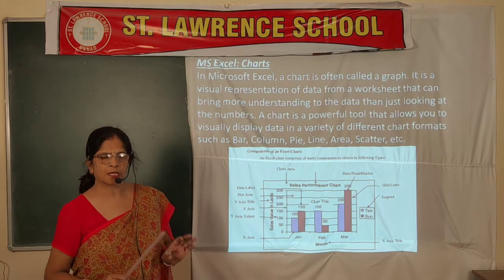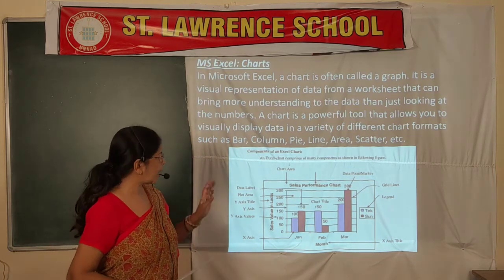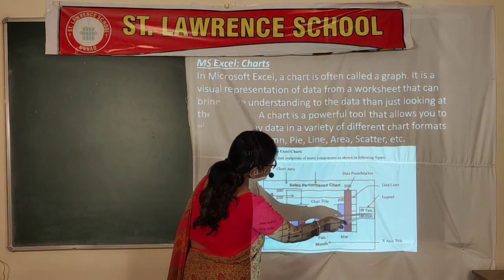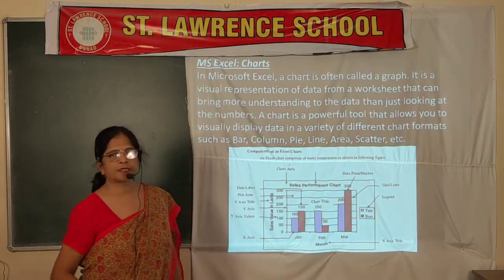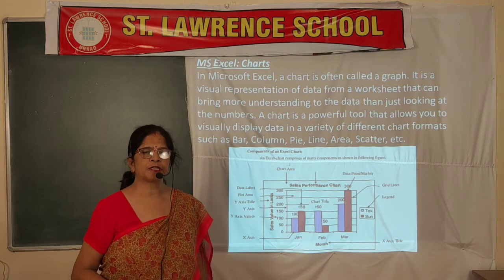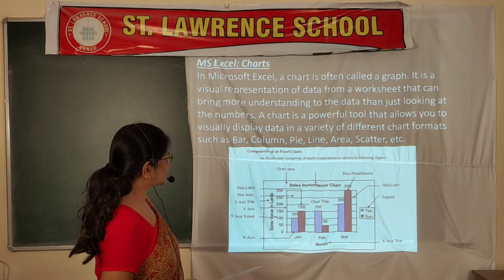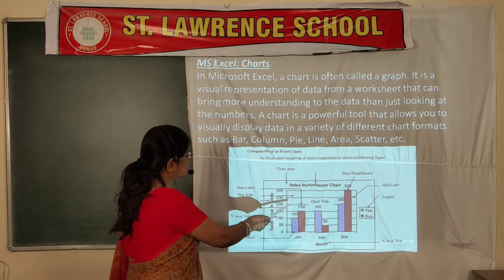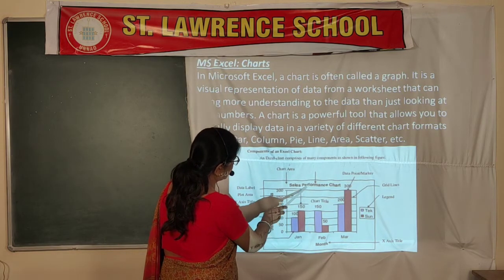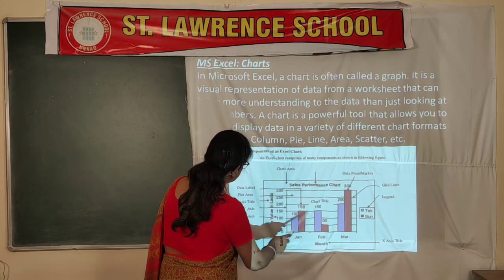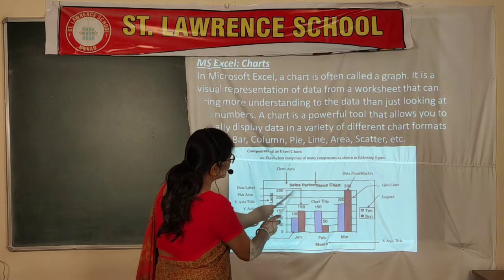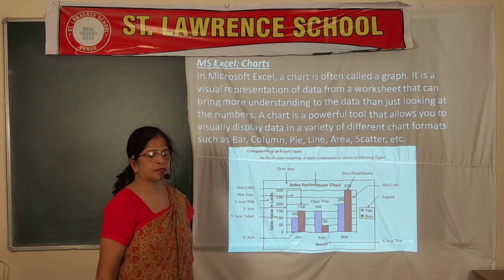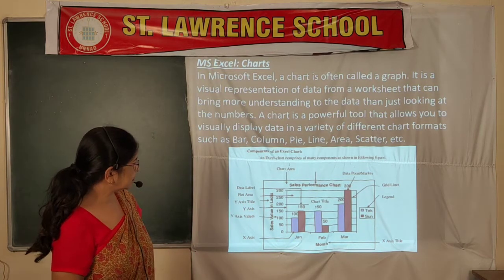Normally in charts, the X-axis takes the categories and the Y-axis takes the values. The legend represents different data series with different patterns or colors so you can recognize which color represents which data series. There are also data labels and a chart title. The X-axis title and Y-axis title label each axis, and grid lines help you easily read data values.